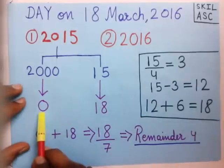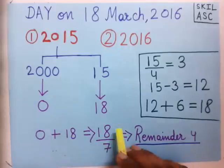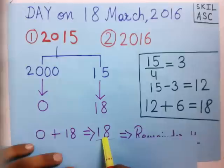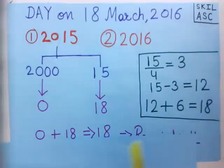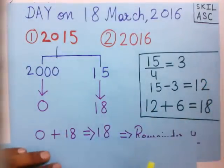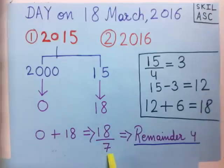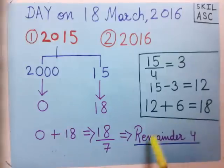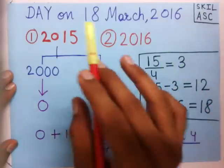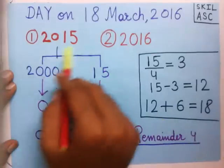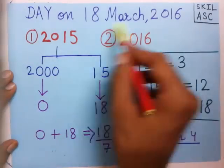Adding the odd days: 0 (from 2000) plus 18 (from 15 years) gives 18 odd days for the first part. Since the number of odd days can only be from 0 to 6, we divide 18 by 7 and the remainder is 4. So for the first part we have 4 odd days.